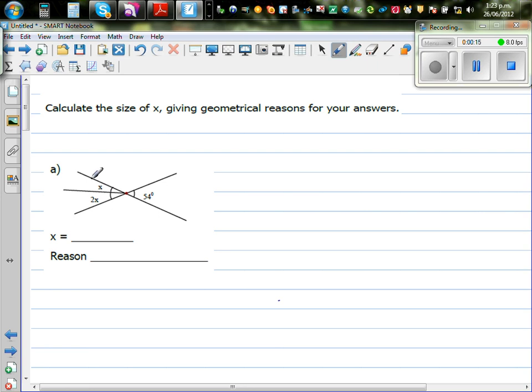So this angle, this angle if you look at it, is X plus 2X. So this angle would be 3X. And this angle is 54. So I hope you know the rule when two lines intersect. They are called vertically opposite angles.